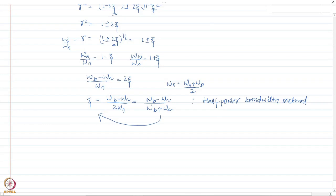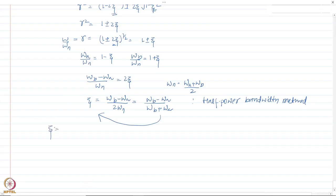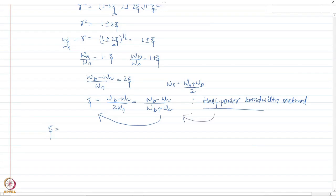This is the half power bandwidth method: draw a horizontal line at Rd,max / √2, read off the two frequencies ωa and ωb where it intersects the curve, and use those to calculate the damping ratio ζ. This is analogous to the logarithmic decrement method used in free damped vibration. Both methods can be conveniently used to experimentally determine the damping in a system.